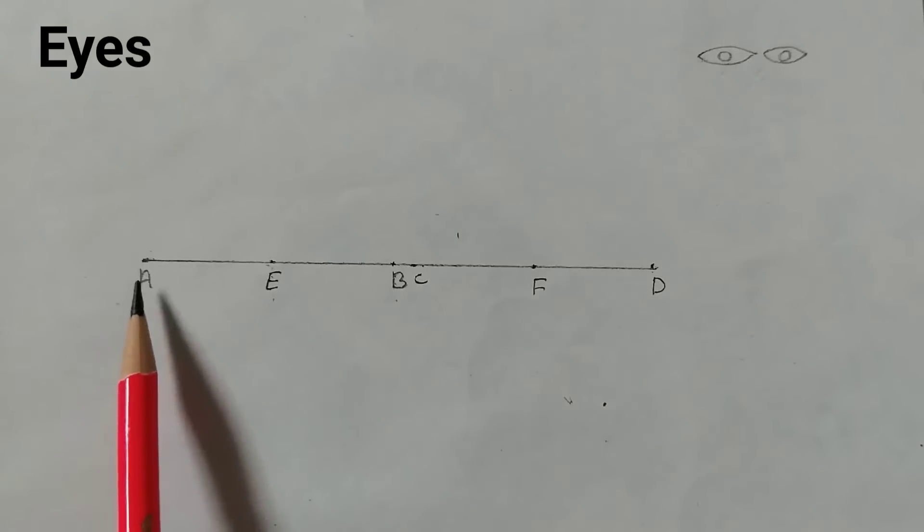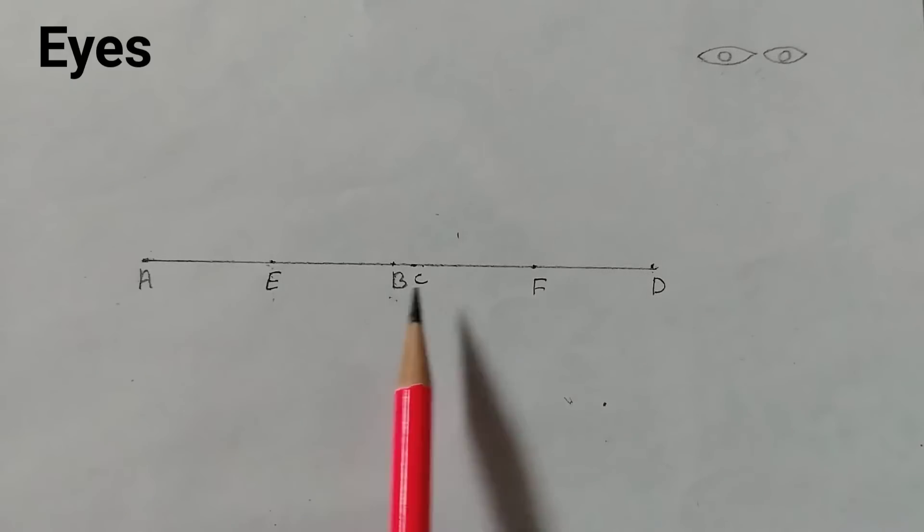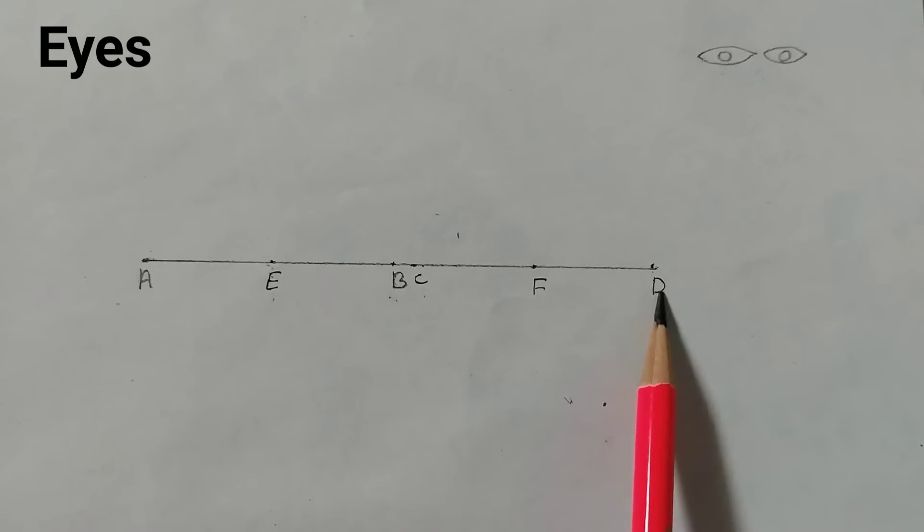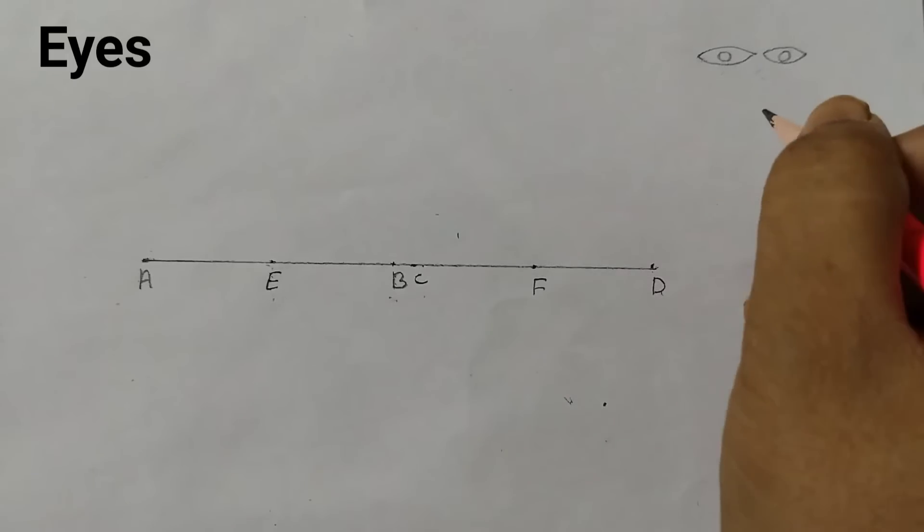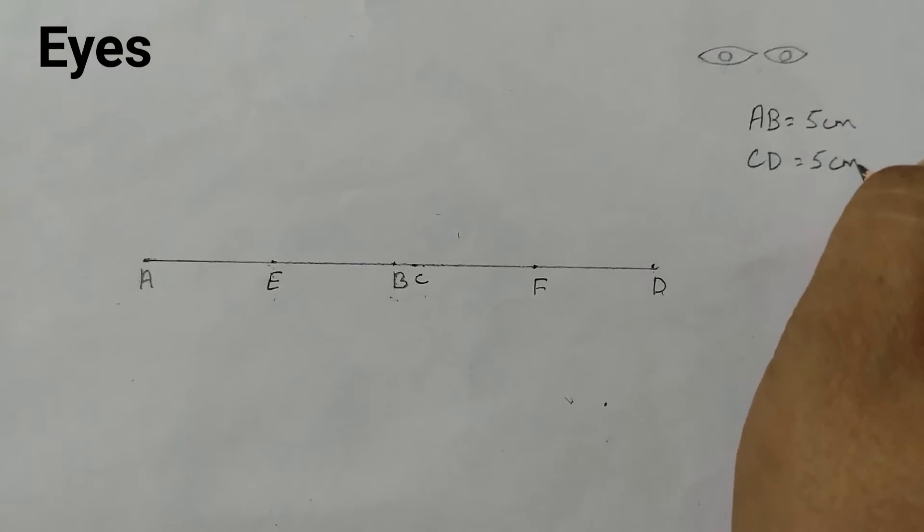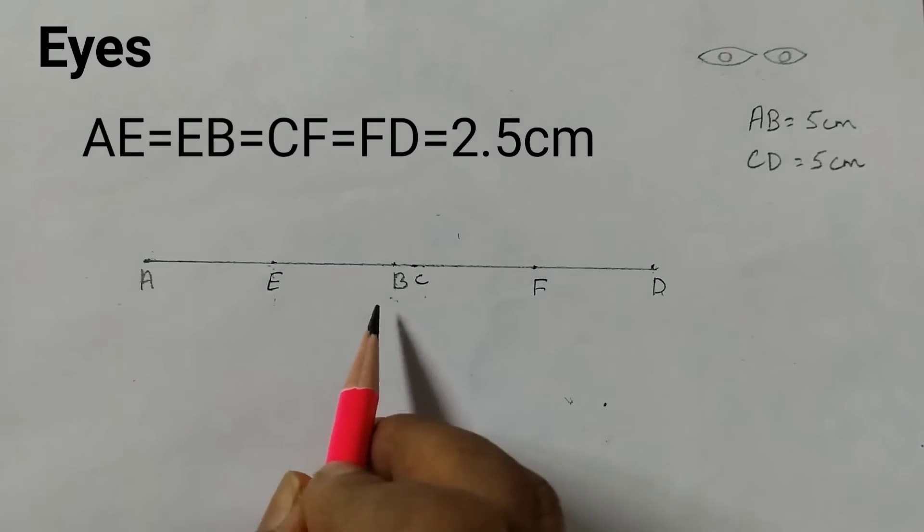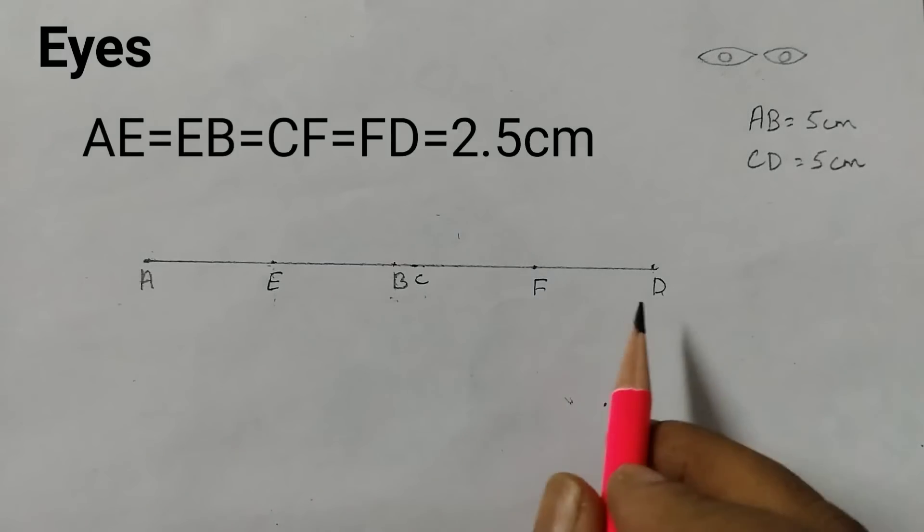What I have done is, I have taken AB as 5 cm, CD as 5 cm. E is the midpoint of AB, F is the midpoint of CD.